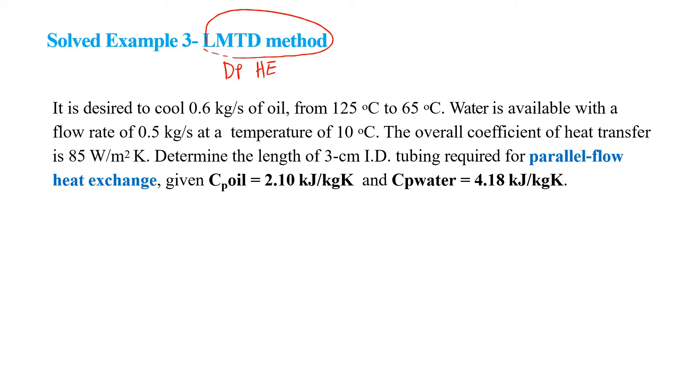The problem is exactly the same as the one before except that now we have different configuration. It is desired to cool 0.6 kg per second of oil from 125°C (T hot in) to T hot out. Water is available with a flow rate of 0.5 kg/s at a temperature of 10°C (T cool in). The overall coefficient of heat transfer is 85 W/m²·K.